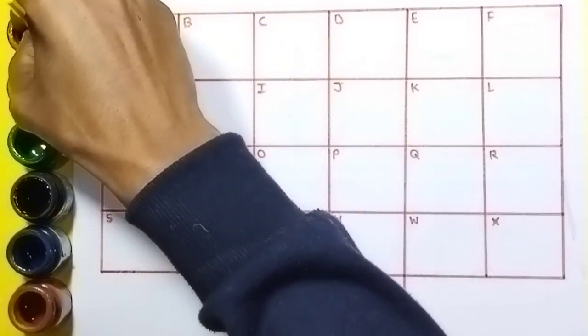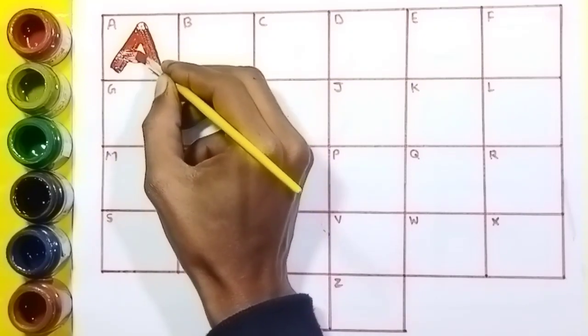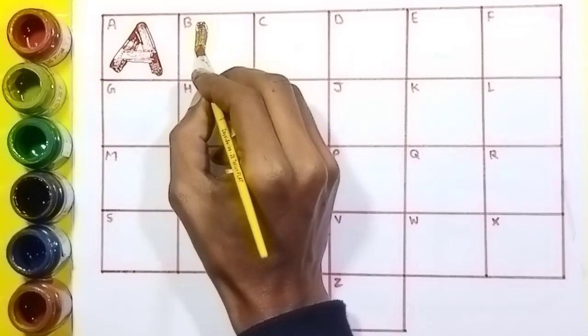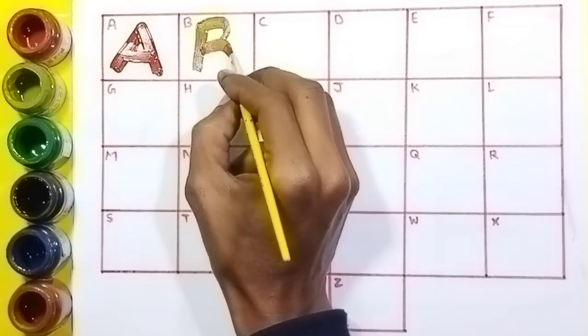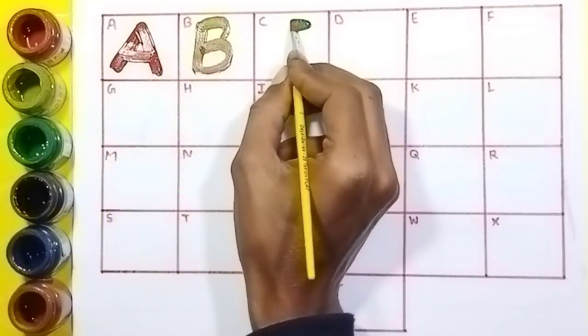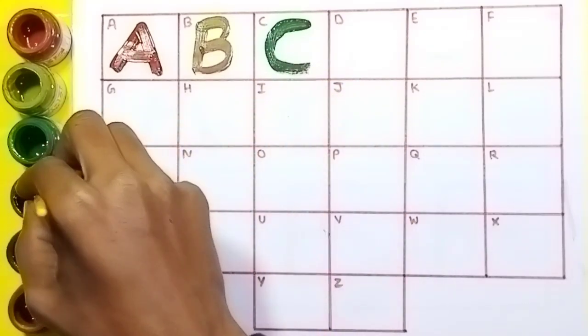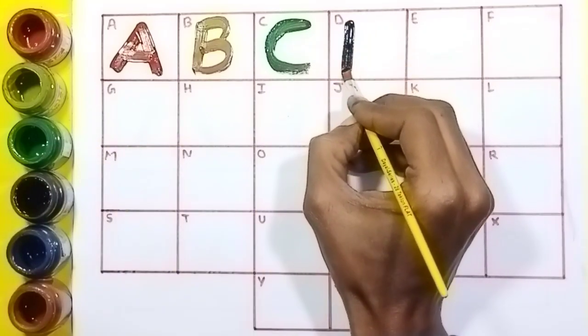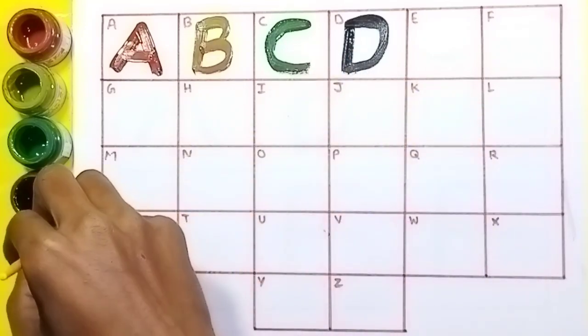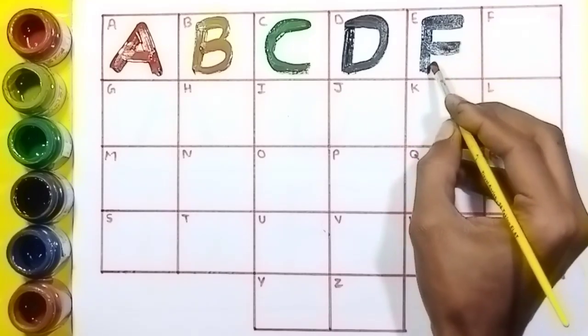Red color: A, A for apple. Yellow color: B, B for ball. Green color: C, C for cat. Black color: D, D for dog. Blue color: E, E for elephant.